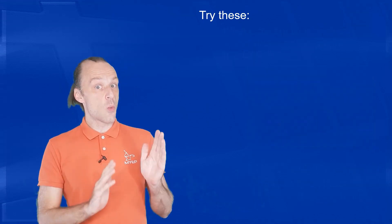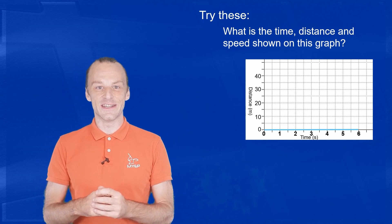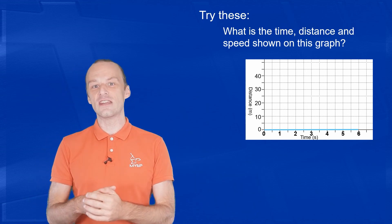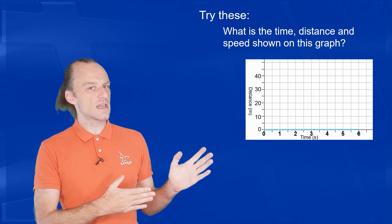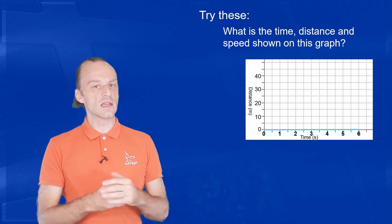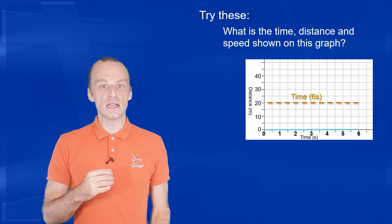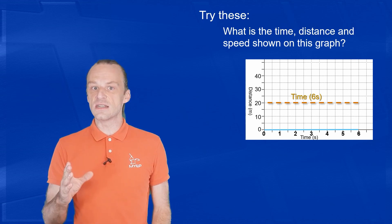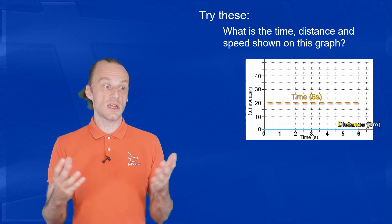Let's try one more. What do you think the time, distance, and speed of this object is? Take a moment if you need to. Just use the same ideas as before, but there's something different here, isn't there? This graph is running for 6 seconds along the x-axis, but in that 6 seconds it doesn't go up at all. The distance is 0, and 0 divided by 6 is 0, so this speed is 0 meters per second.